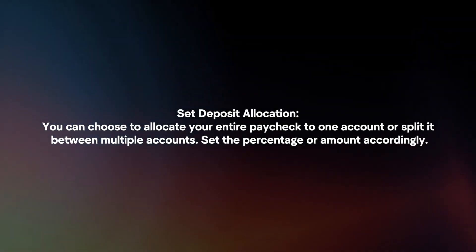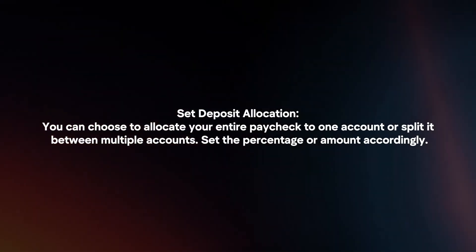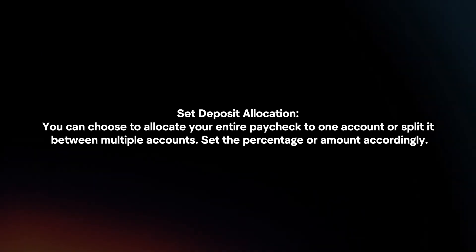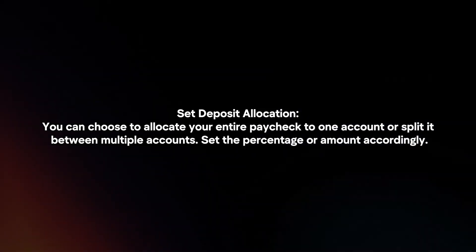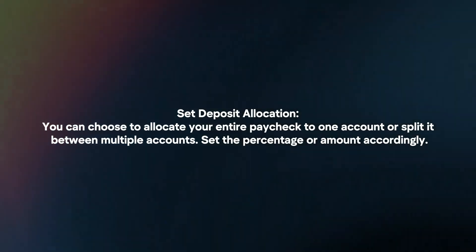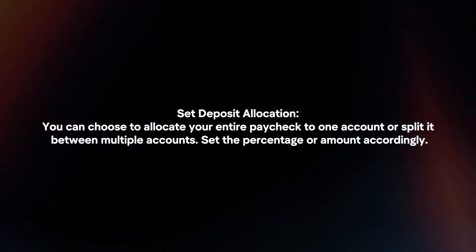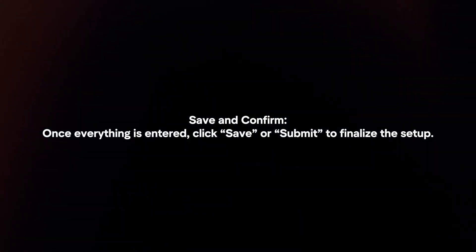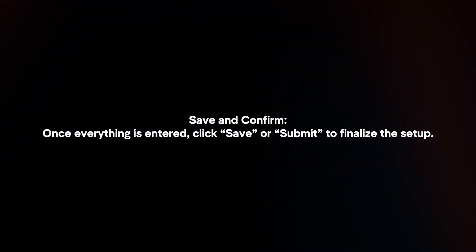Set Deposit Allocation. You can choose to allocate your entire paycheck to one account or split it between multiple accounts. Set the percentage or amount accordingly. Once everything is entered, click Save or Submit to finalize the setup.